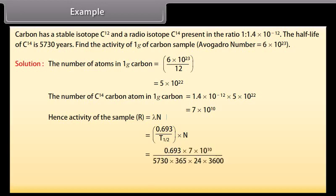The number is equal to 0.693 into 7 into 10 raised to the power 10 by 5730 into 365 into 24 into 3600, which is equal to 0.26 per second per gram, approximately 16 per minute per gram.